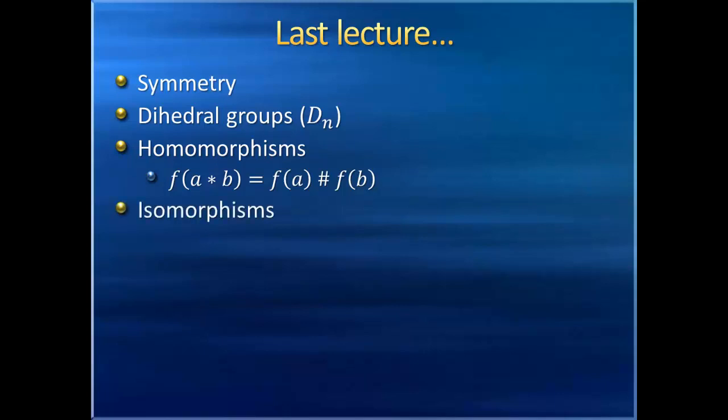We then saw that if our homomorphism f also happens to be a bijection, then it's a special type of function called an isomorphism. We discovered that if two groups are isomorphic to each other, then they're basically the same under the hood, shared the same properties, and work exactly the same way.